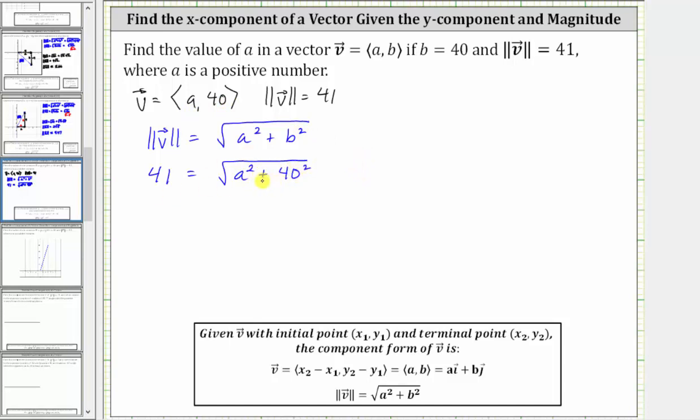And now we need to solve this equation for a, and we are told a is a positive number. Let's first undo the square root by squaring both sides of the equation.